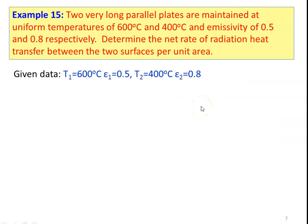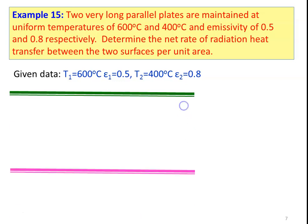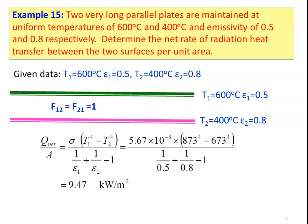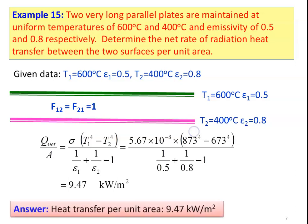Example 15: Two very long parallel plates are maintained at uniform temperatures of 600°C and 400°C with emissivities of 0.5 and 0.8 respectively. Determine the net radiation heat transfer between the two surfaces per unit area. For very long parallel plates, F12 = F21 = 1. Substituting into the equation: Q/A = 5.67×10⁻⁸ × (873⁴ − 673⁴) / (1/0.5 + 1/0.8 − 1) = 9.47 kW/m².